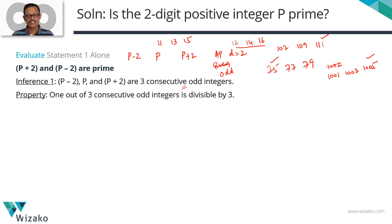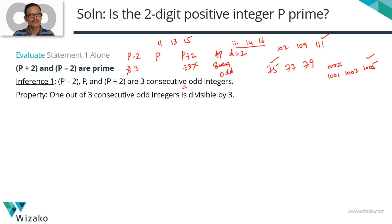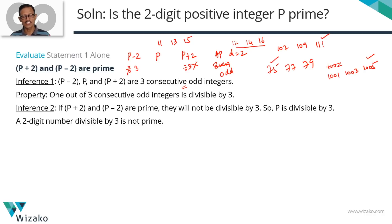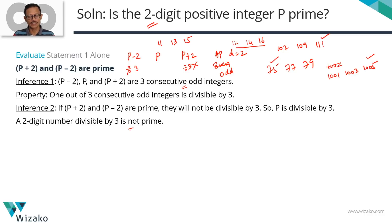Now we draw the key inference. The question states p + 2 is a prime number — and since it's a two-digit prime, it can never be divisible by 3. Similarly, p − 2 is also prime, so it's not divisible by 3 either. But we know p − 2, p, and p + 2 are three consecutive odd integers, so one of them must be divisible by 3. Since p + 2 and p − 2 cannot be, that leaves only p. Therefore p must be divisible by 3.